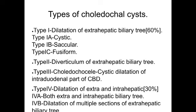There are five types of Choledochal Cyst. Type 1 is dilatation of extra-hepatic biliary tree, accounting for 60% of cases. Under Type 1, there are subtypes: Type 1a is cystic, Type 1b is circular, and Type 1c is fusiform.